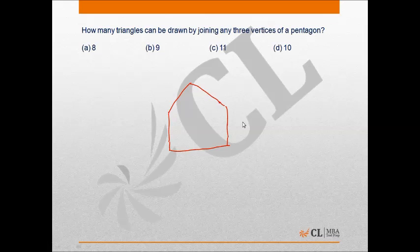we need three non-collinear points. So in the case of a pentagon, we have exactly five non-collinear points, and by joining any three of these points, we can get a triangle.